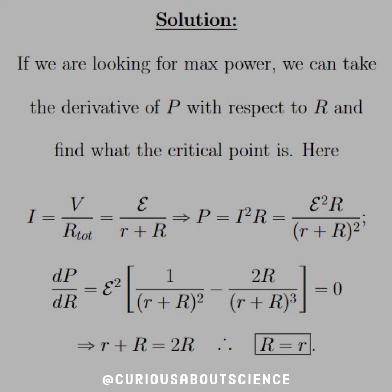You get a quotient rule — or product rule if you're clever. Either way, simplify it nicely. By setting the derivative equal to zero, we're only concerned where the fractions are equal to one another. Cross-multiplying gives some cancellations, and those cancellations yield little r plus big R equal to two R. Therefore, if we want the maximum possible load, big R has to equal little r.